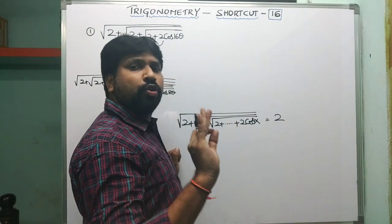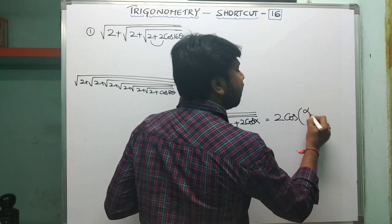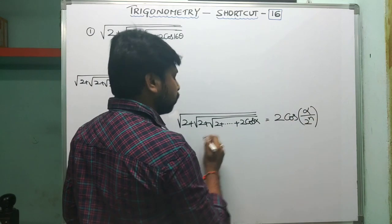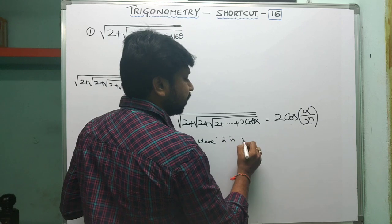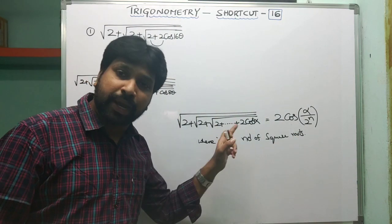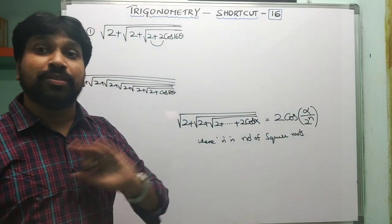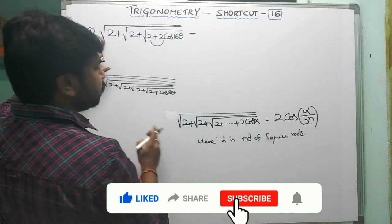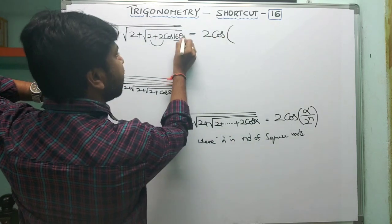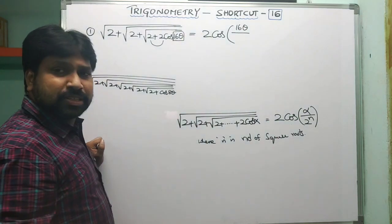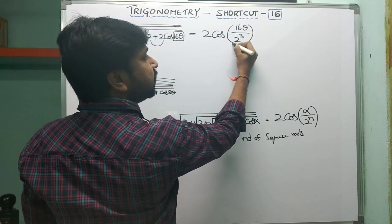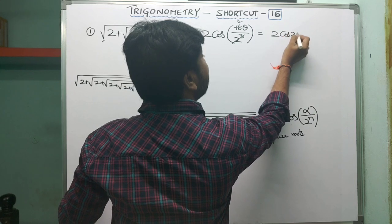Directly, without applying any trigonometric formulas, you can write: 2cos(α / 2ⁿ), where α is the angle inside the expression and n is the number of square roots. Count the square roots and that is n. Applying this to our example: square root of 2 plus square root of 2 plus square root of 2 plus 2cos(16θ). Alpha is 16θ, divided by 2 to the power of n. There are 3 square roots, so n=3, giving 2³=8. So 16θ / 8 = 2θ, and the answer is 2cos(2θ).